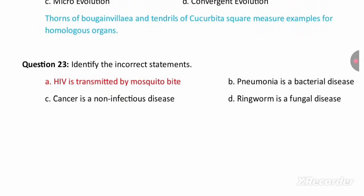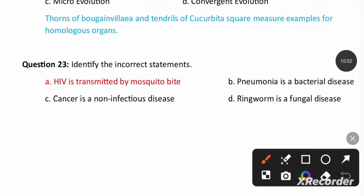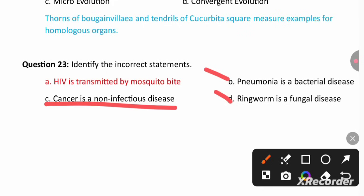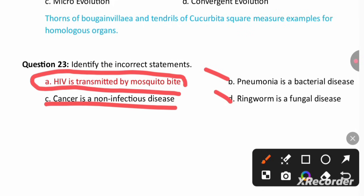Identify the incorrect statement. The correct statements are: pneumonia is a bacterial disease, ringworm is a fungal disease, and cancer is a non-infectious disease. The incorrect statement is that HIV is transmitted by mosquito bite.